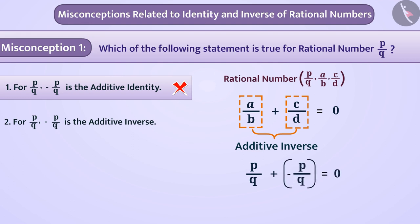Therefore, for P by Q, minus P by Q is the additive inverse. Therefore, option 2 is the correct answer.